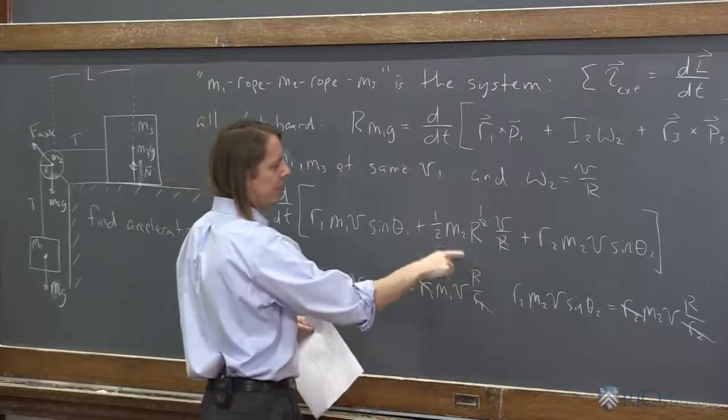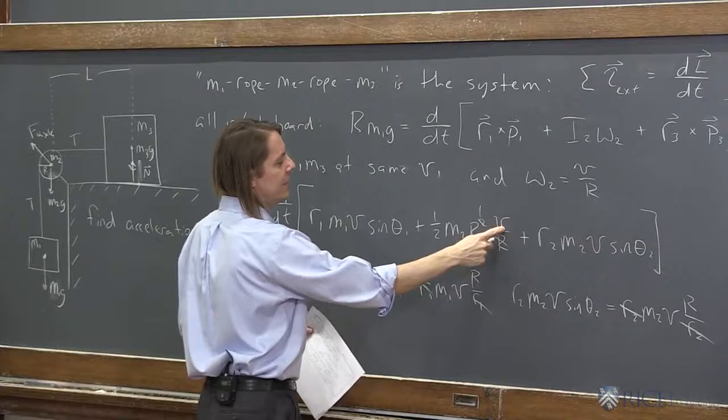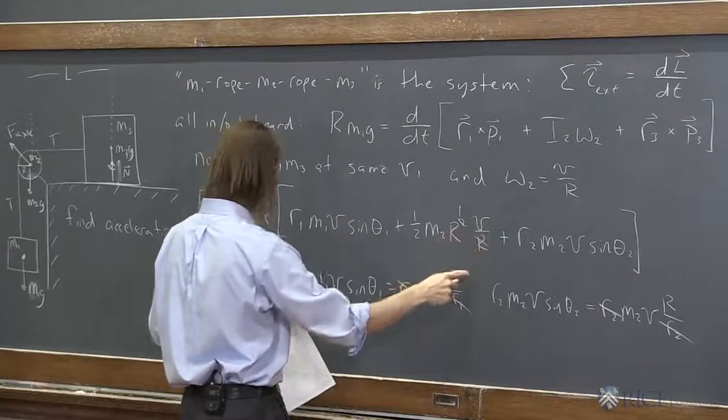What does this term become? Constant, constant, constant. DDT makes it A. So it's one half big R M2 A.